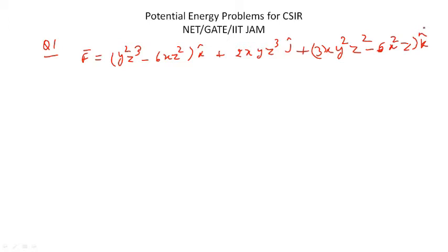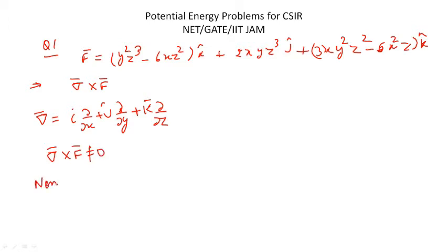To find the nature of the force, you will find del cross F where del is an operator or it is d'Alembert operator. It is equal to i del over del x plus j del over del y plus k del over del z. So here, if you solve it by determinant method, then you will find that your del cross F is not equal to zero. So your force is non-conservative.